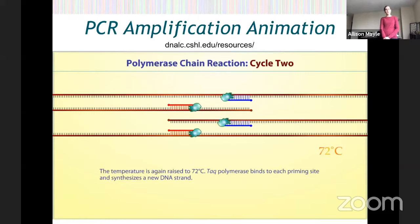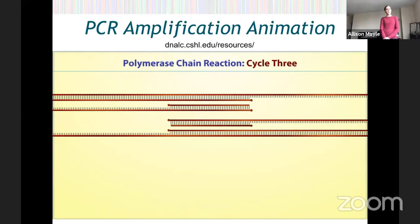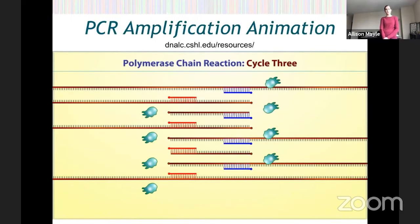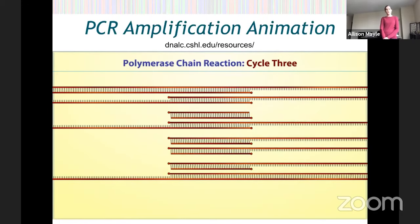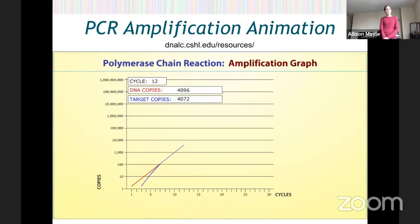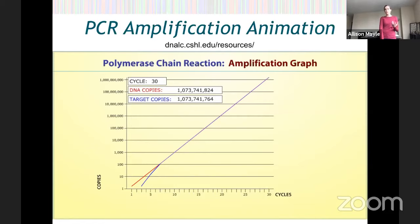This is called a chain reaction because we use the product of each step to do the next step. As we denature again and our primers anneal again, starting mostly in cycle three, we're going to start to accumulate just the piece that we want — just the barcode. By cycle four and five these continue to accumulate. If we started with just one double-stranded piece of DNA, we end up with over a billion copies if we do 30 cycles of PCR. We usually do 30 to 35 cycles.